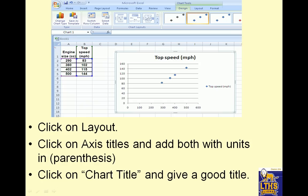So once you do that and you insert that, you get something like this. Click on layout, okay? So when you click on layout, then you'll get these chart design tools. So layout. Click on axis titles and add both with units in parentheses. Click on chart title and give a good title. Now, the default is top speed. That's not a good title.